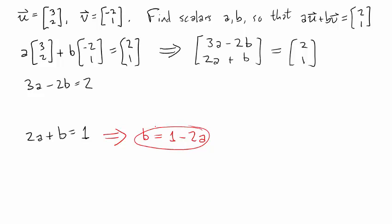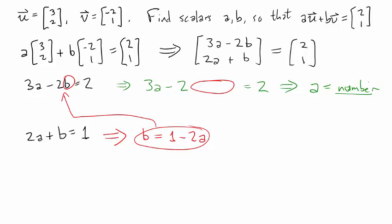You can take this expression for b and plug it in to this b here in the first equation. So then you'd have something like this, 3a minus 2, what you have for b there is equal to 2. And what this will be is an expression involving only the variable or the scalar a. So you'll be able to solve this for a, and you'll get a to be some number.